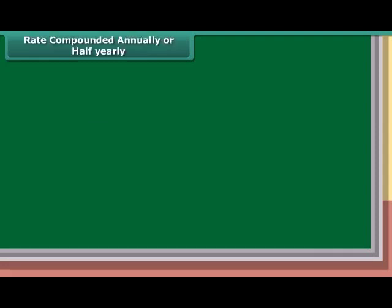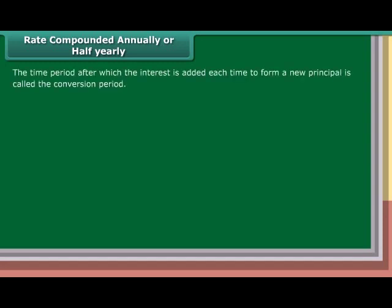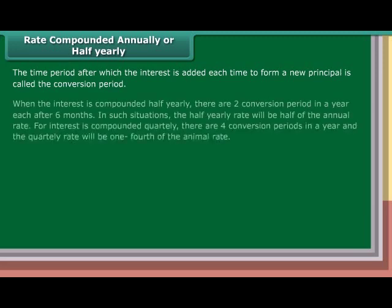Rate compounded annually or half yearly: The time period after which interest is added each time to form a new principal is called the conversion period. When interest is compounded half yearly, there are two conversion periods in a year, each after six months. In such situations, the half yearly rate will be half of the annual rate. For interest compounded quarterly, there are four conversion periods in a year and the quarterly rate will be one-fourth of the annual rate.